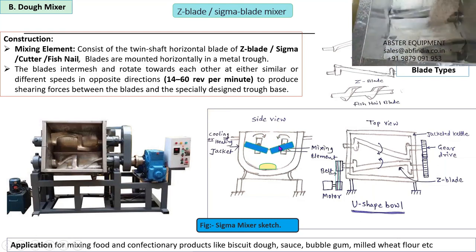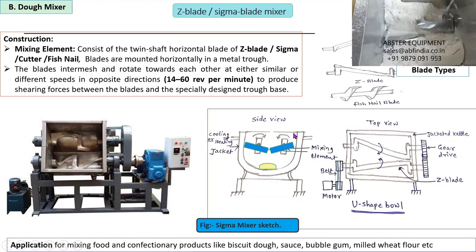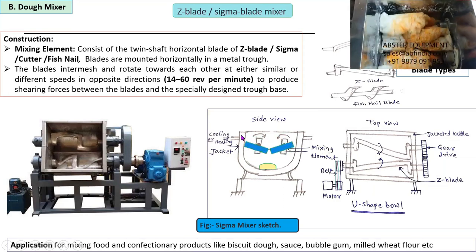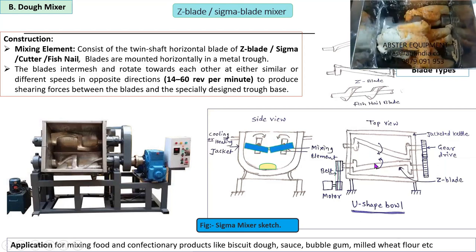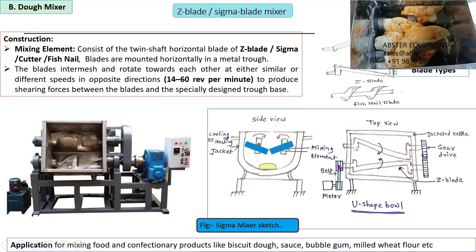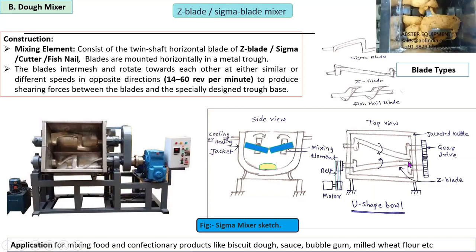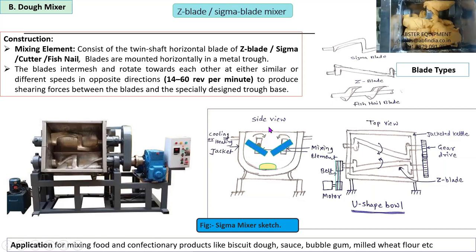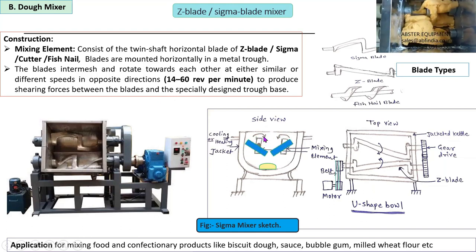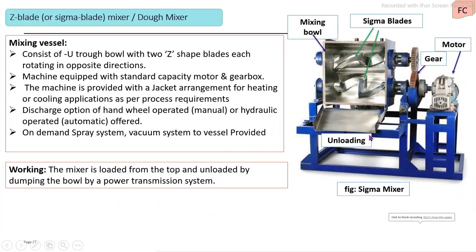The mixing vessel is basically a U-shaped cylindrical trough in which the two mixing elements rotate in opposite directions. Power is transmitted from an electrical motor through a belt or chain system, with provision for a gear drive system. The speed of rotation is very low — 40 to 60 RPM — but high power is required to achieve proper mixing. The main parts of the sigma mixer include the support frame, electrical motor, gear drive system, and the two mixing elements.